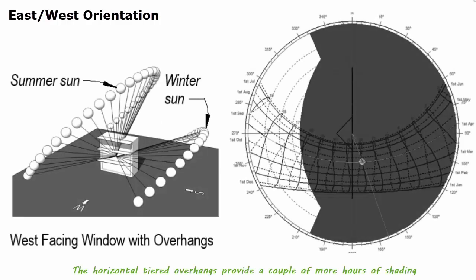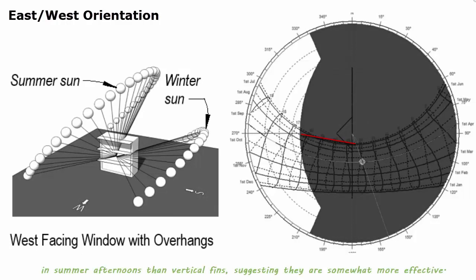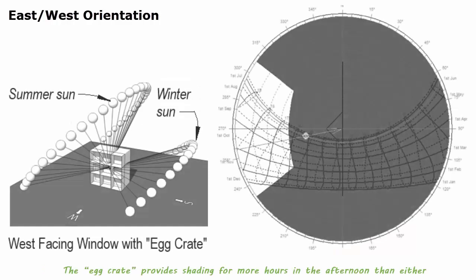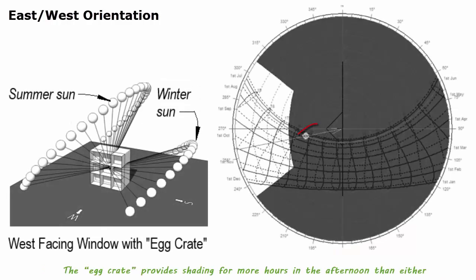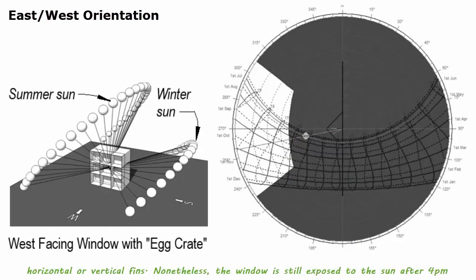The horizontal tiered overhangs provide a couple more hours of shading in summer afternoons than vertical fins, suggesting they are somewhat more effective. The egg crate provides shading for more hours in the afternoon than either horizontal or vertical fins. Nonetheless, the window is still exposed to the sun after 4 p.m.